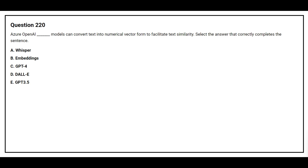Question number 220. Azure OpenAI — blank — models can convert text into numerical vector form to facilitate text similarity. Select the answer that correctly completes the sentence. Option A: Whisper. Option B: Embeddings. Option C: GPT-4. Option D: DALL-E. Option E: GPT-3.5. The correct answer is Option B, Embeddings.